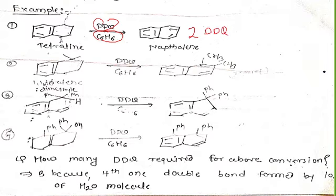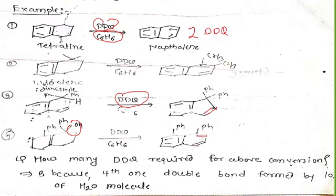On oxidation in presence of DDQ it gets converted to a double bond. In this case there is removal of a water molecule — first a double bond is formed, and in the second case by abstraction of the proton this double bond is formed. That means in this case we require only 1 DDQ.